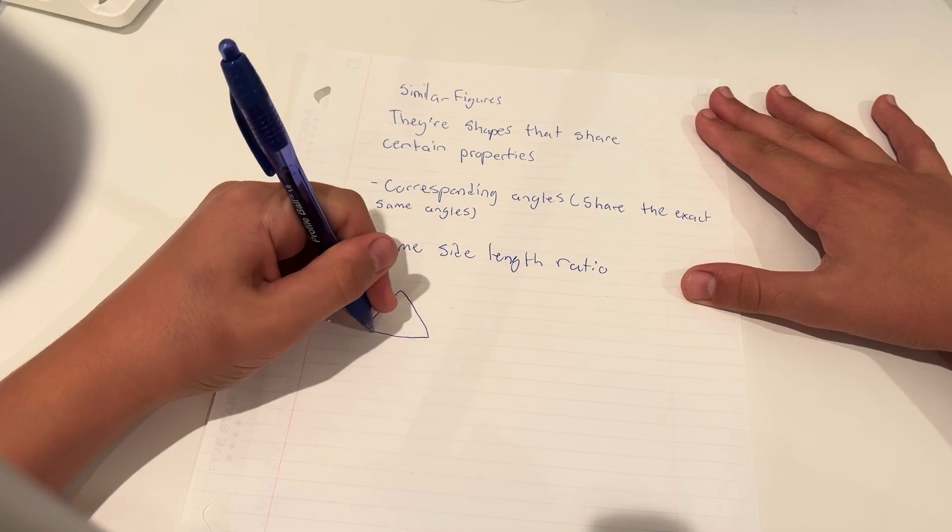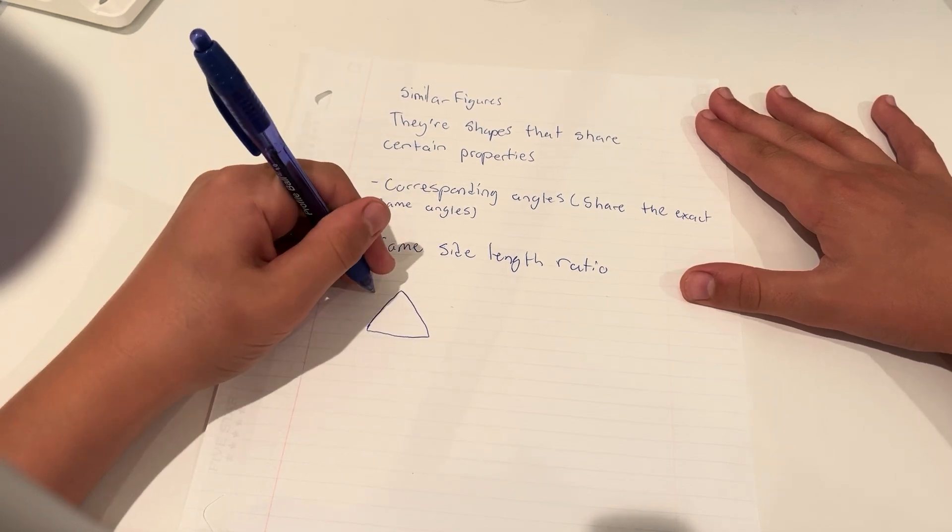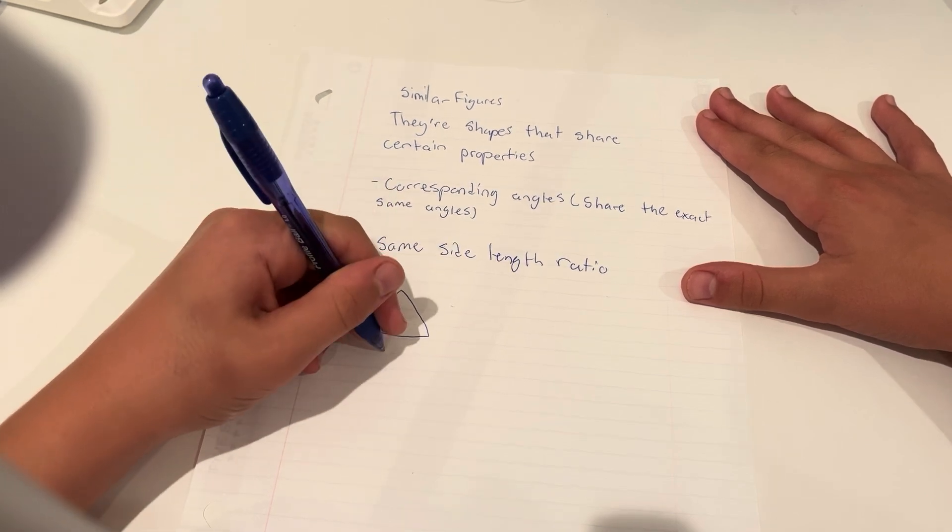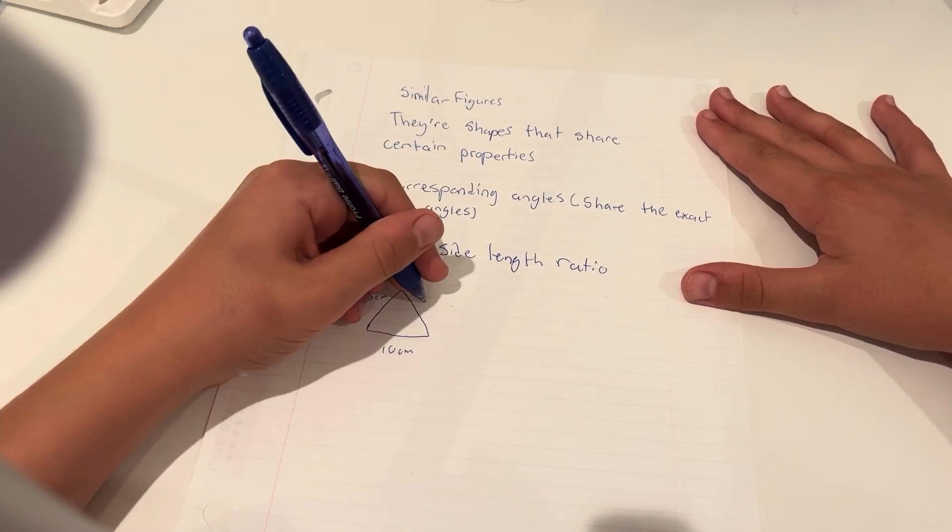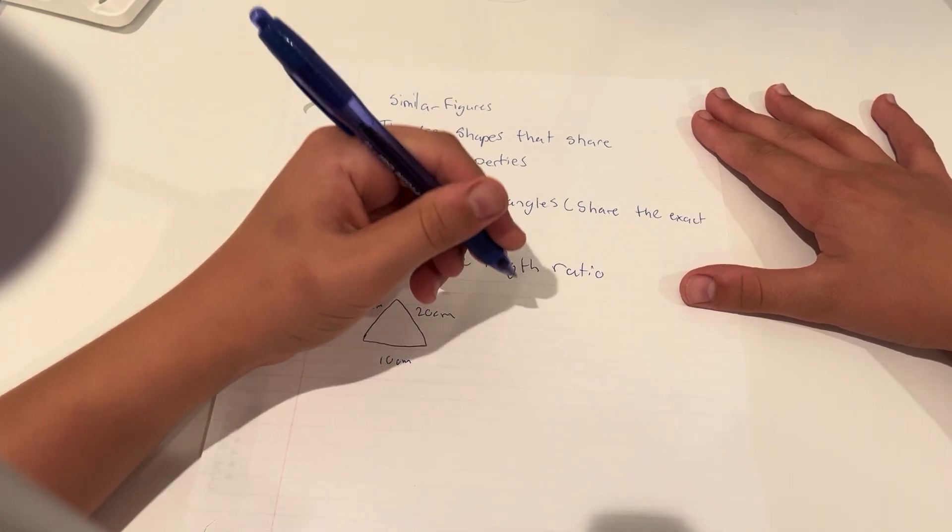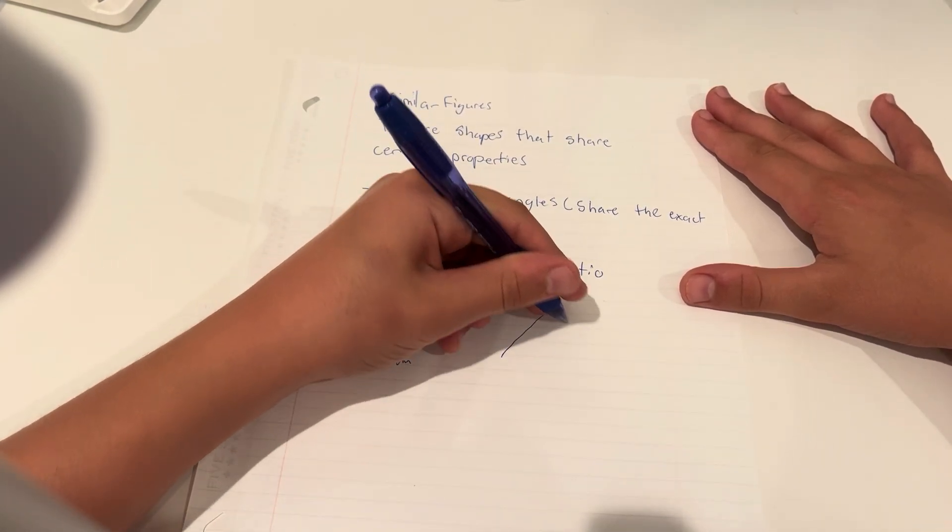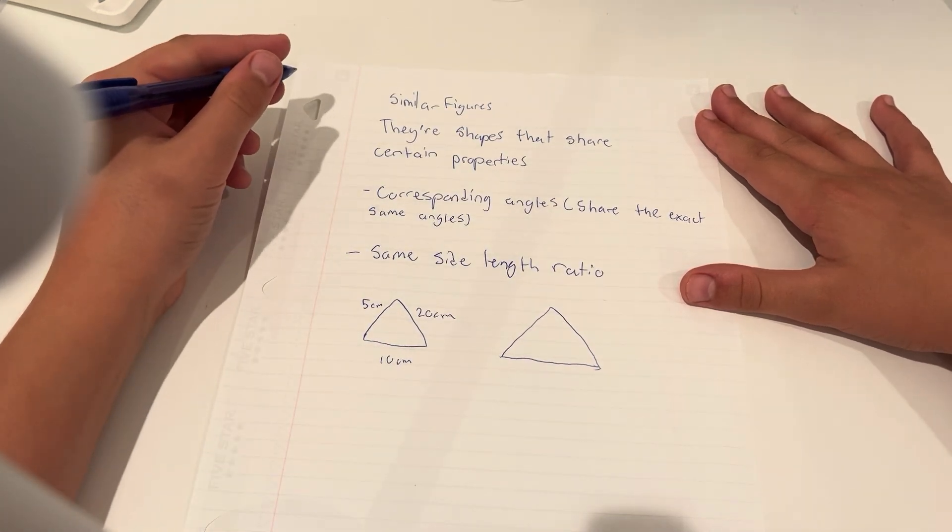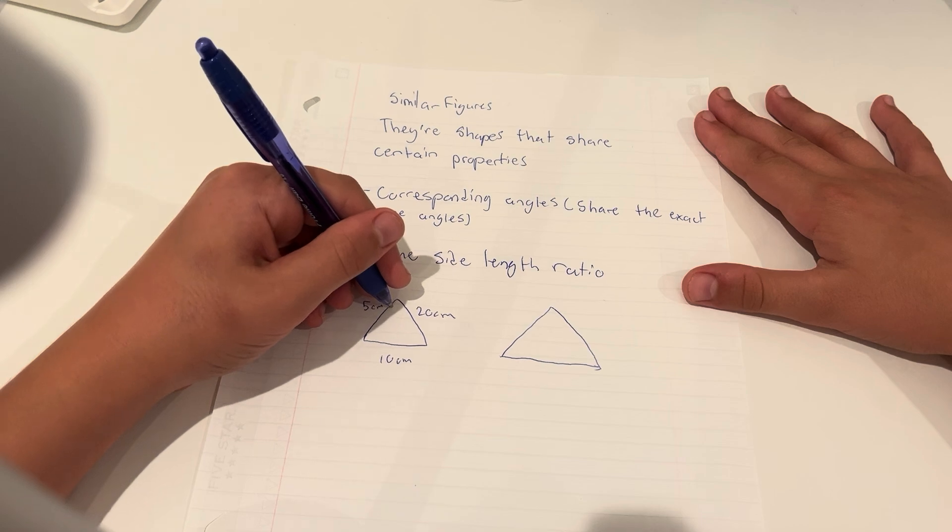Let's say we have one that has a side that's 5 centimeters, one that's 10 centimeters, and one that's 20 centimeters. And we have one that's much bigger, twice as big. Well, in order to be similar, firstly, the angles need to be the same.